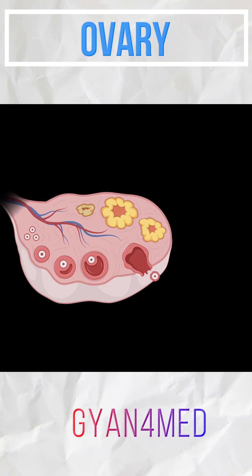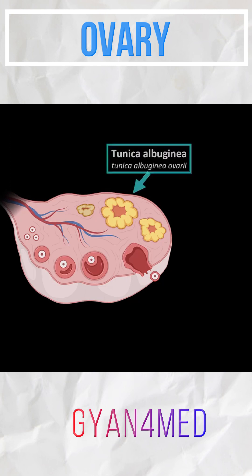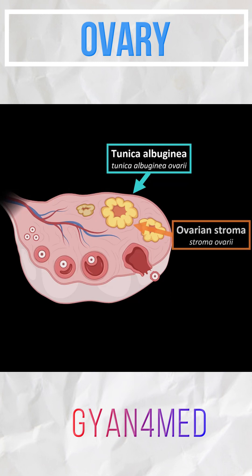First off, the surface of the ovary is covered by the tunica albuginea, composed of connective tissue fibers. Within the actual ovary, between follicles, you will find loose connective tissue. That connective tissue is called the ovarian stroma.